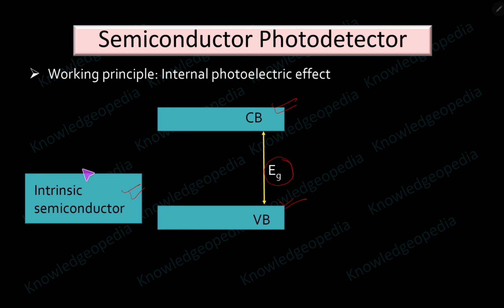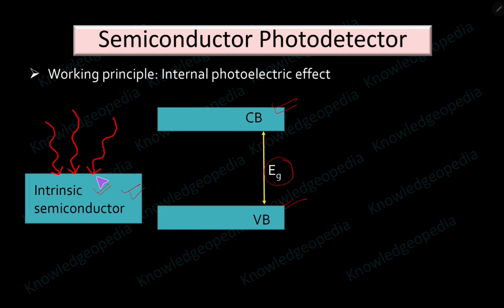If we incident some light on this intrinsic semiconductor, these photons will be absorbed by the electrons. If the energy of a photon is more than the energy gap EG, those electrons are able to jump from the valence band to the conduction band — a transition of electrons from valence band to conduction band — creating electron-hole pairs.